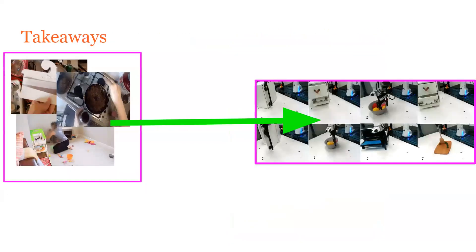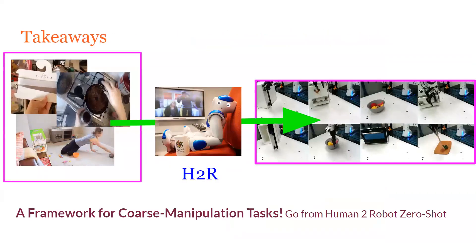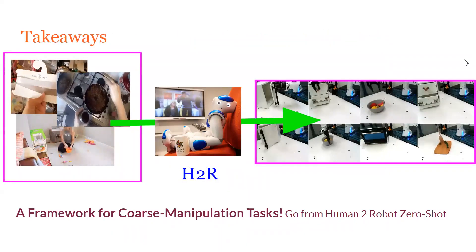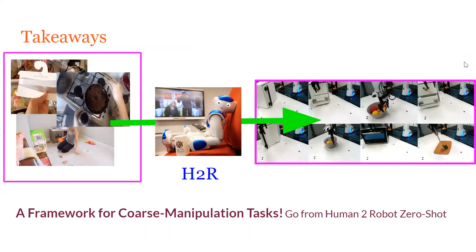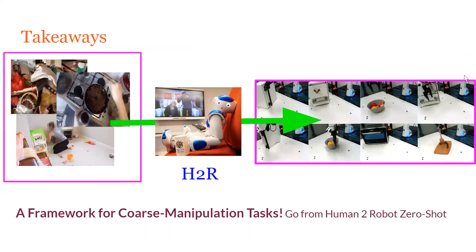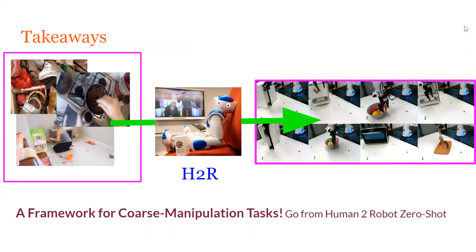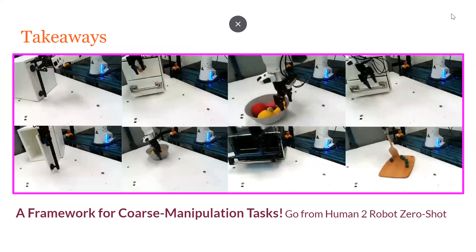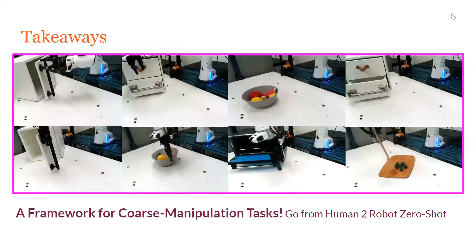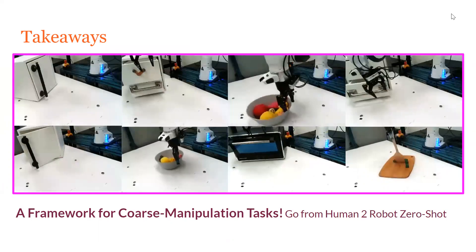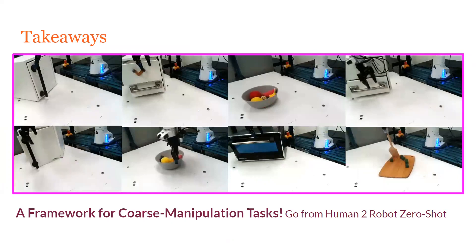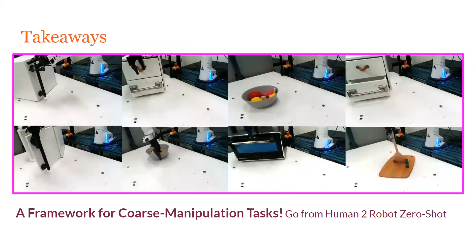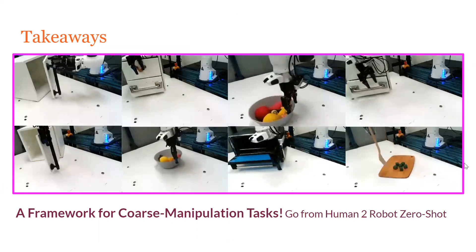In summary, we developed an approach to go from unstructured human videos to robot manipulations, by developing a framework targeting coarse robot manipulation tasks. We hope our work provides understanding of the limits of extracting action representations from passive human videos alone, such that they are useful for zero-shot robot manipulation. Thank you.